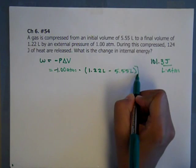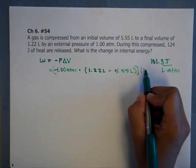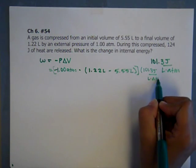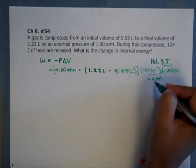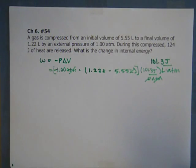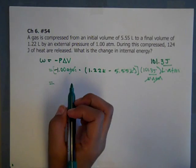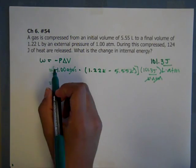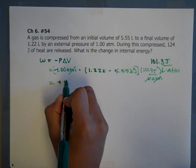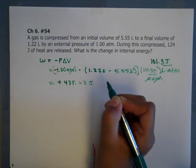So we have this answer and it's going to be in liter atmospheres. So if we multiply by the 101.3 joules per liter atmosphere, we are able to cancel this out. So that way our final answer for work will end up in joules, as we need it to be. And it's going to end up being a positive number because we're multiplying two negatives. So it's going to be a positive 438.63 joules.